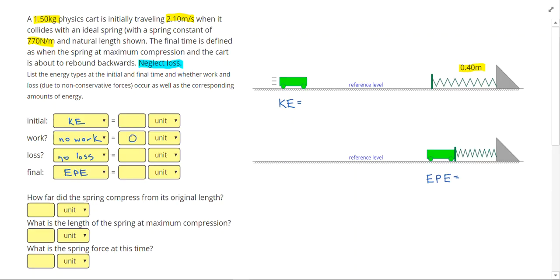I know for no work and no loss I can go ahead and write down 0 joules. So now it's time to start filling out our given. I know I'll need to use the kinetic energy equation. So KE equals one half mv squared. And the elastic potential energy equation which is EPE equals one half kx squared. So underneath kinetic energy I'm going to write the things I see in the equation so m and v. And underneath elastic potential energy I'm going to write k and x. 1.50 kilograms is the mass of the cart. 2.10 meters per second is the velocity. And 770 newtons per meter is the spring constant k.